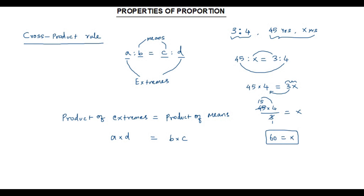Using the cross product rule, we can solve this kind of problem. That is, among the four quantities in a proportion, if we know the value of three quantities, we can solve for the fourth quantity using this property, the cross product rule.